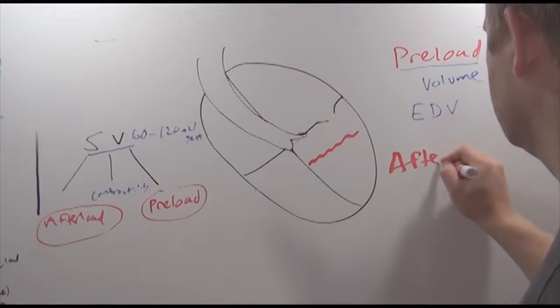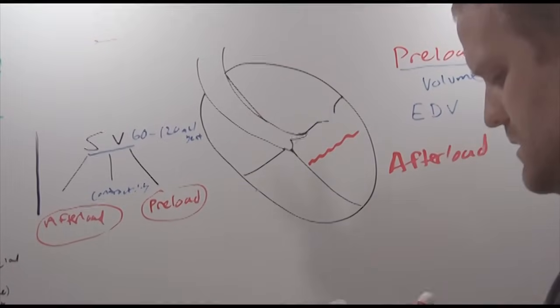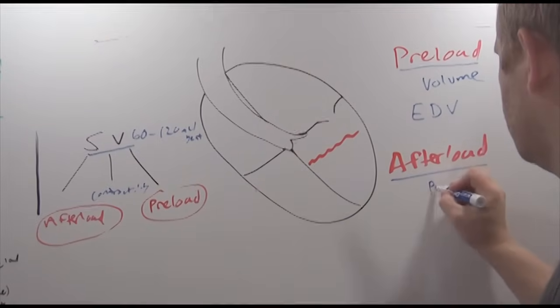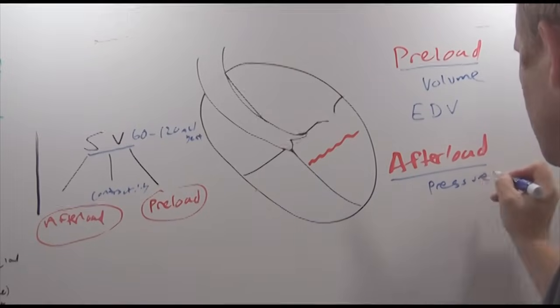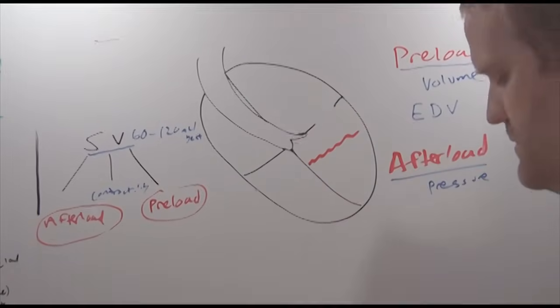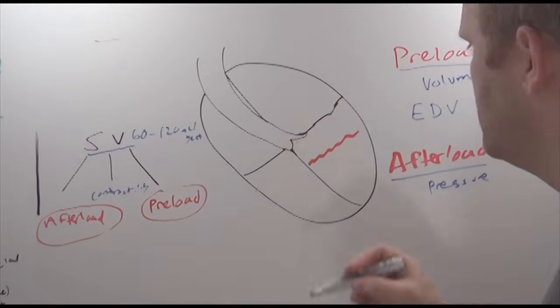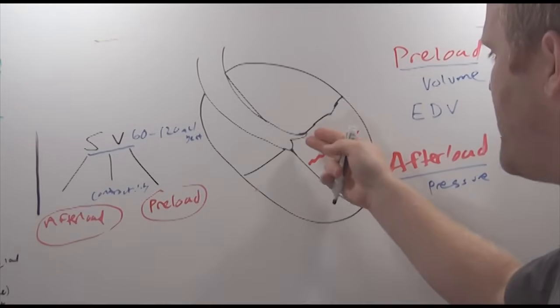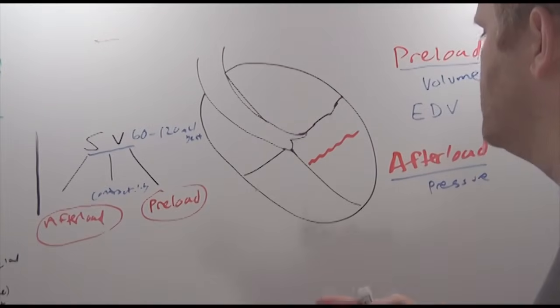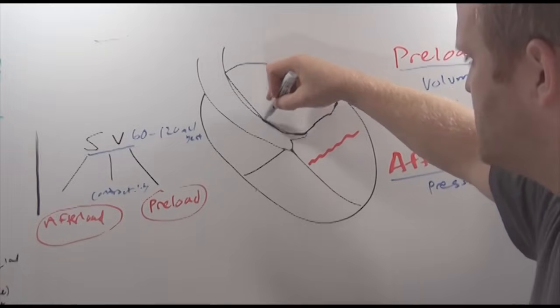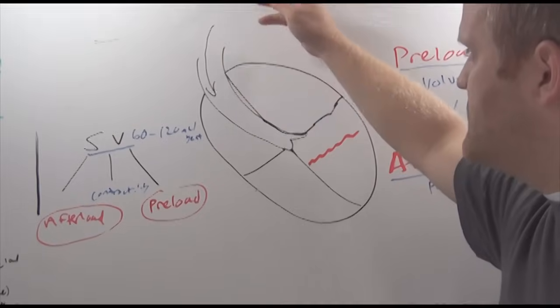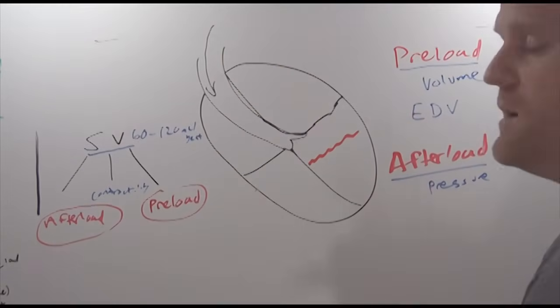Afterload, on the other hand, is a pressure. So once diastole is completed, the mitral valve is going to close. And the next thing that needs to happen is the aortic valve needs to open. But in order for that aortic valve to open, it has to overcome a very specific pressure. It has to overcome the pressure of the volume in the system keeping the aortic valve closed.